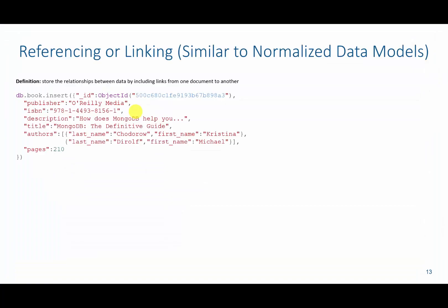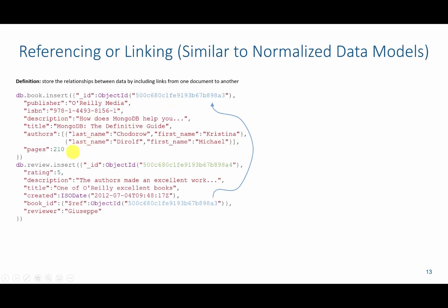In NoSQL, we're going to use what is called referencing, linking, or embedding. Referencing and linking is less common — think of it as similar to a relational database, where we're going to have an object ID associated with, for example, a book. We then create a review collection that has object IDs for each one of those, and it references a book ID using that object ID — so this object ID points to this object ID.